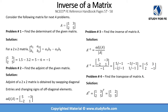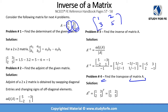Problem number four asks us to find the transpose of matrix A — a quick recap of something we've seen earlier. The transpose involves converting rows into columns. I take column one and translate it into a row, and column two and translate it into a row as well. This is the transpose of the given matrix.